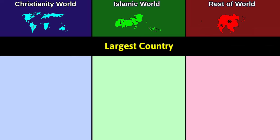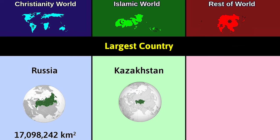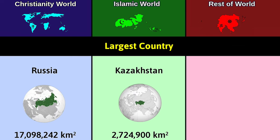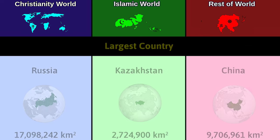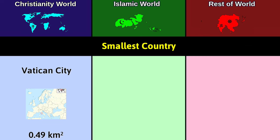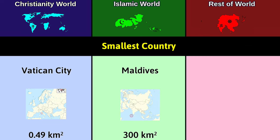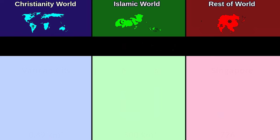Largest country: Christianity — Russia at 17.09 million square kilometers; Islam — Kazakhstan at 2.7 million square kilometers; Rest — China at 9.7 million square kilometers. Smallest country: Christianity — Vatican City at 0.49 square kilometers; Islam — Maldives at 300 square kilometers; Rest — Singapore at 726 square kilometers.